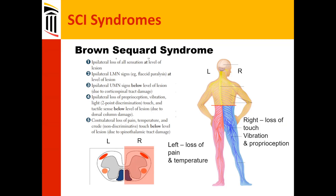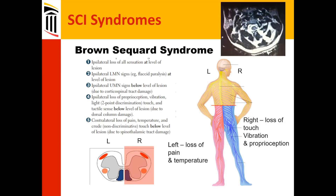Brown-Séquard syndrome involves a unilateral lesion to the cord. If the lesion is on the right, there is loss of touch, vibration, and proprioception below that lesion on the right, and loss of pain and temperature on the left, depending on where the fibers cross. It's very rare — only a few cases seen in years of practice. One example shown is a patient who was stabbed in the neck, presenting with Brown-Séquard syndrome.